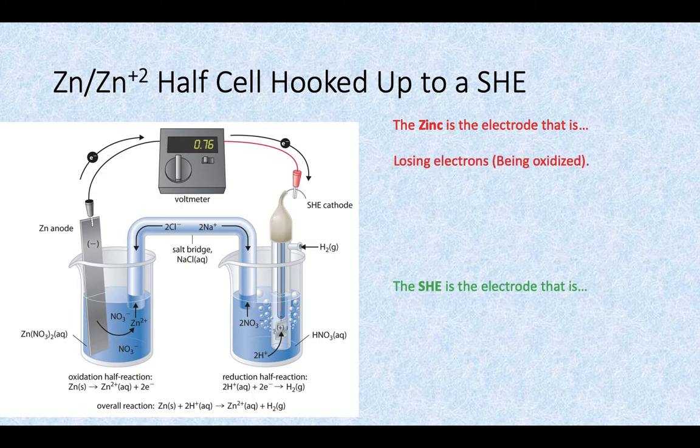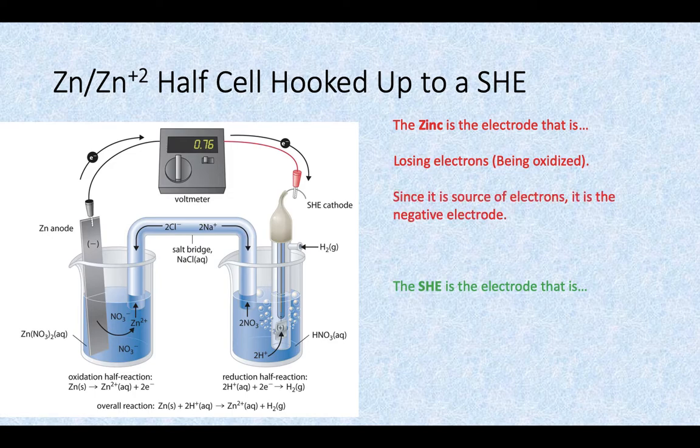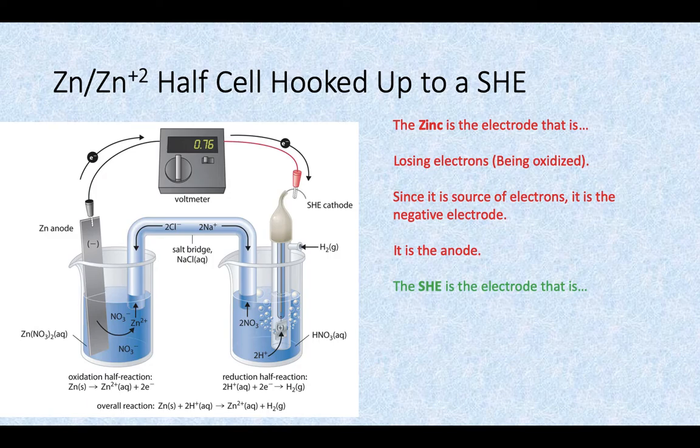So if the zinc is losing the electrons, Leo the lion goes ger, that means that the zinc is being oxidized. Since it's the source of the electrons, it's the negative electrode. We call that the anode - just like anion is a negatively charged ion, the source of those electrons, the zinc, is our anode.